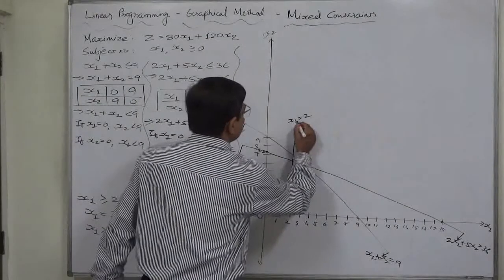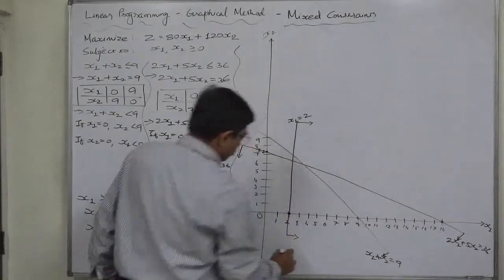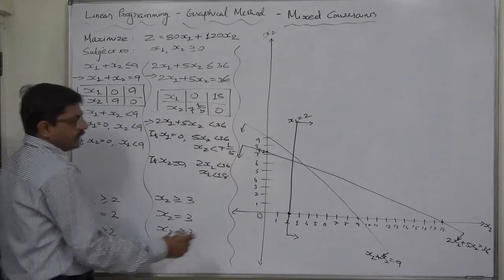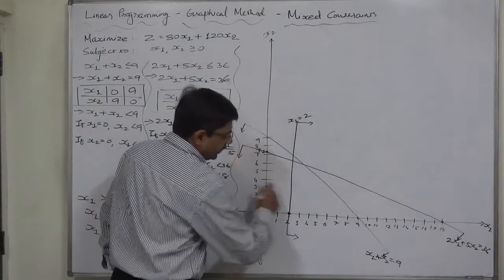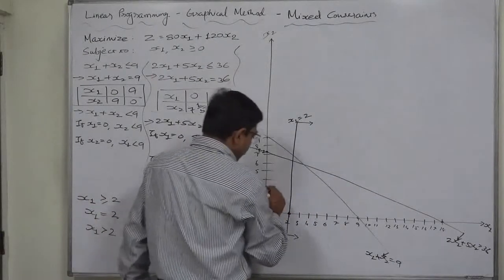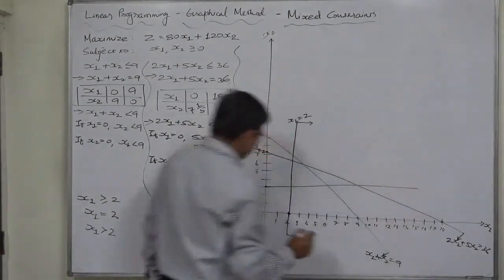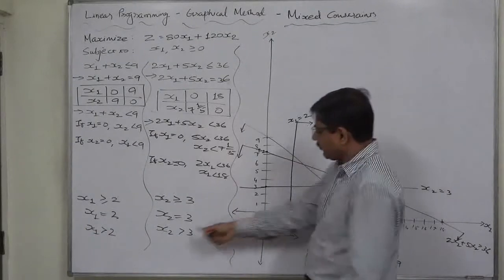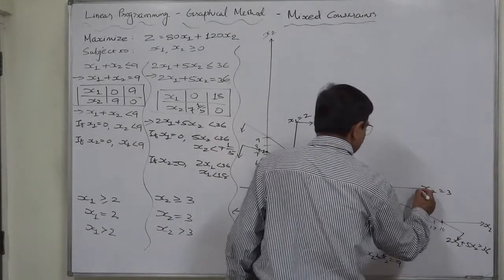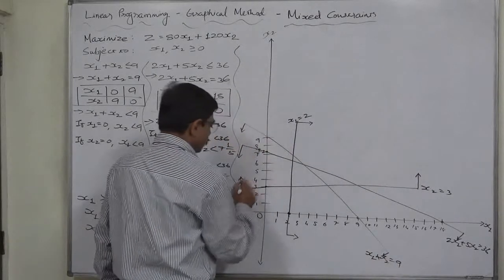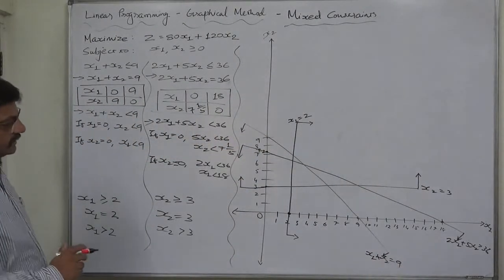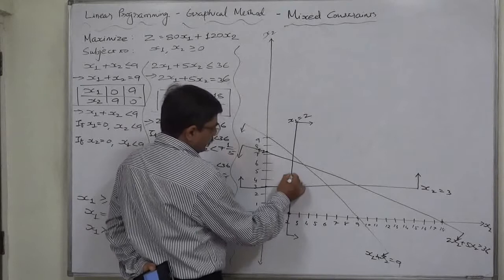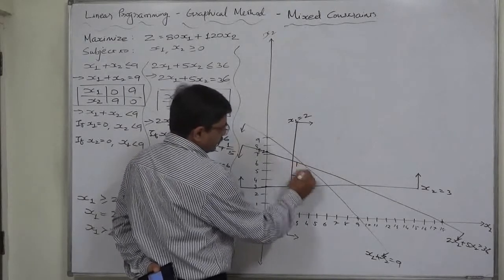x1 equals to 2 and x1 greater than 2, 2 or more. Then similarly x2 equals to 3. x2 equals to 3 and for any value of x1 it remains 3. So straight line parallel to x1. This is x2 equals to 3 and inequality is x2 greater than 3. If we determine the shaded region, it will be for this upper side, for this outer side, for this inner side, for this inner side.